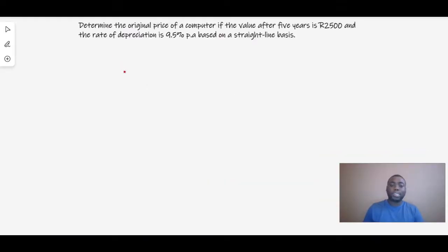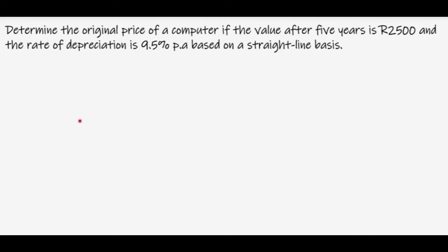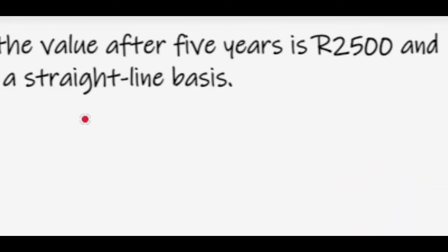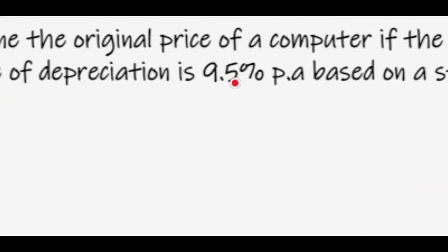We're going to do an example using simple depreciation. The question says: determine the original price of a computer if the value after five years is 2500 and the rate of depreciation is 9.5 percent on a straight-line basis. We need to identify A, P, i, and n. N is five because we have five years, and i is 9.5 percent.